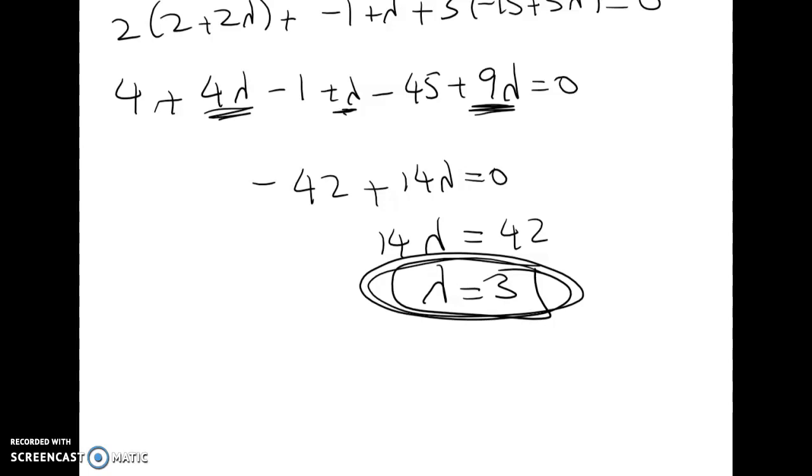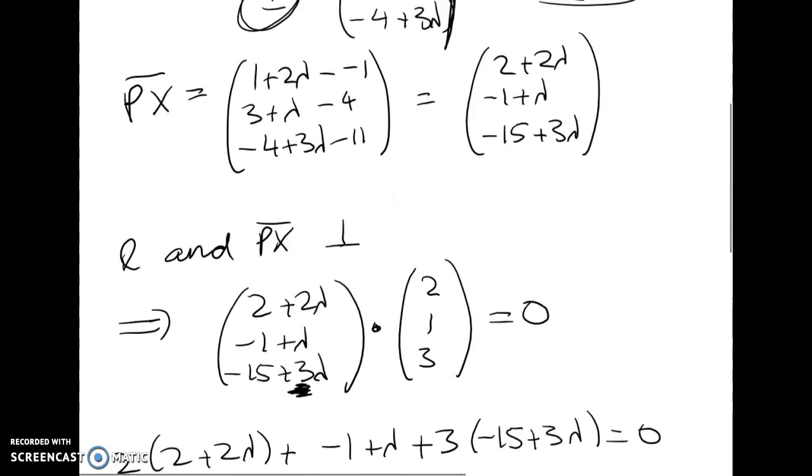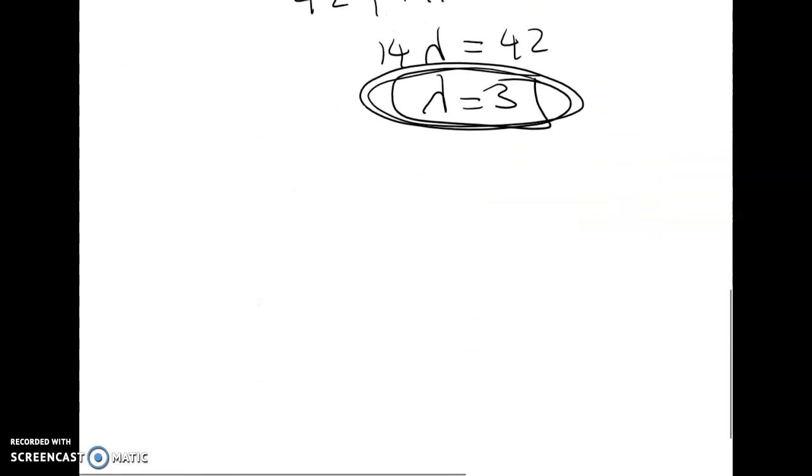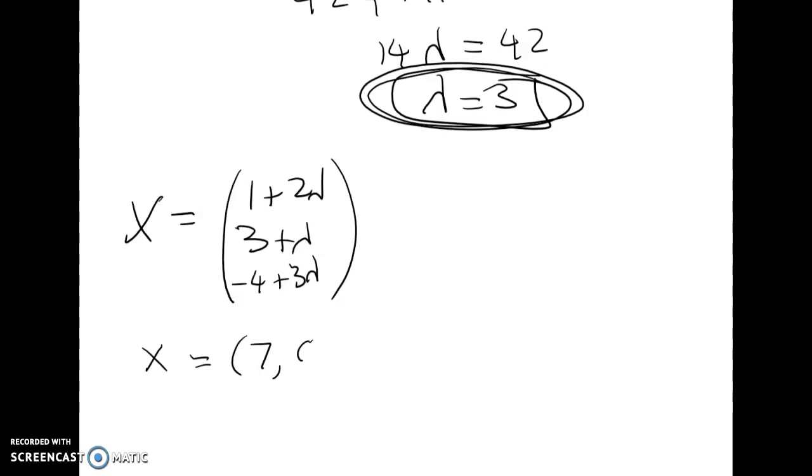We've got a lambda value. What can I do with that now? Well, I can get the coordinates of point X, because point X can be found by now subbing in λ = 3. So let's do that. X: 1 + 2λ, 3 + λ, and -4 + 3λ. So the coordinates of X, writing that now as a point: 7, 3 + 3 is 6, and -4 + 9 is 5.